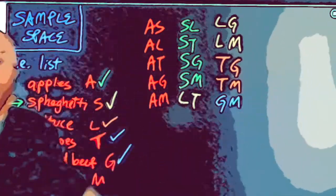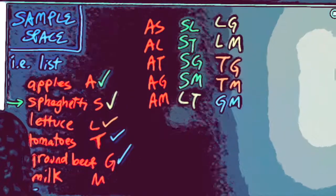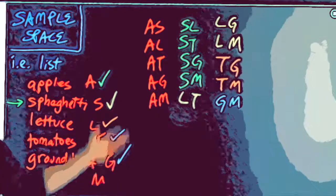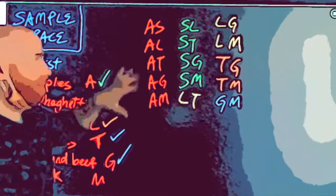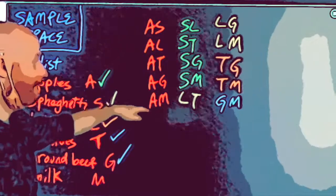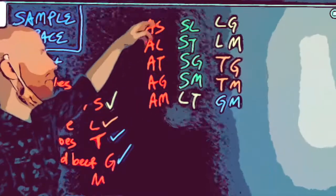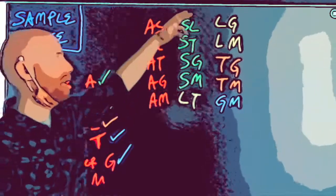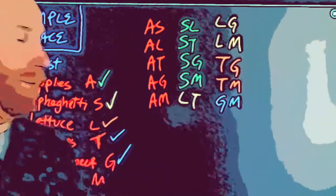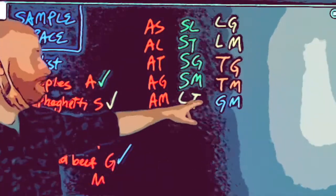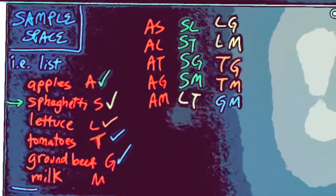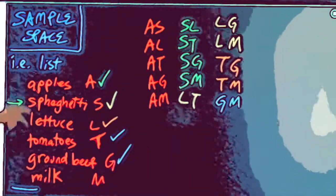This is an organized list of every possible way to forget two things. It felt like it was going to take a long time at first, but with each successive item there are fewer and fewer new combinations. There are only 15 possible ways to forget two things off this list.